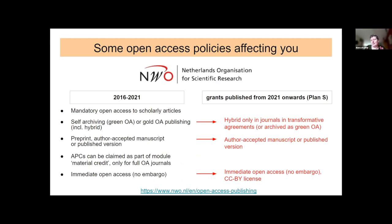These policies are very similar to the new NWO policies. NWO has had an Open Access policy for several years requiring Open Access publishing in Open Access journals, hybrid journals, or by green archiving. A new policy aligning with Plan S now applies to grants published going forward — if you currently have a grant, the old policy applies. Under the new policy, immediate Open Access is required along with a CC BY license. To quell a common misunderstanding: Plan S does not forbid publishing in hybrid journals.